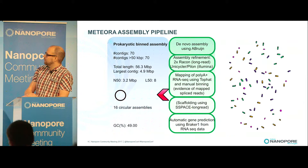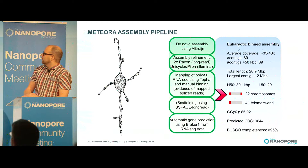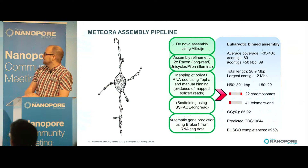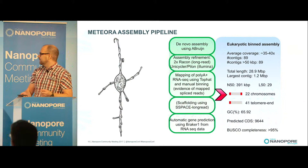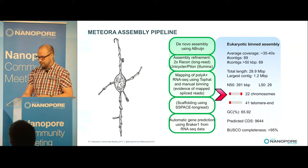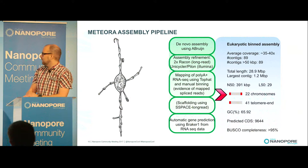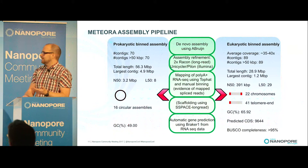For the prokaryotic bin, we obtained 70 contigs with an N50 of 3.2 megabases and 16 circular assemblies. For the eukaryotic part, we had an average coverage of around 35 to 40 times, 89 contigs, 22 full chromosomes bounded by telomeric repeats, and 41 contigs with telomeric ends on one end. The genome assembly was very complete, with a BUSCO completeness score above 95%. Given that Meteora is a very unusual organism, you wouldn't necessarily expect all BUSCOs to be present, so this was very promising — we were reliably able to differentiate the prokaryotic bin from the eukaryotic bin and still get a very decent genome assembly.